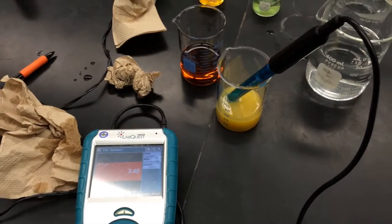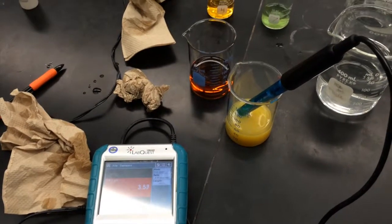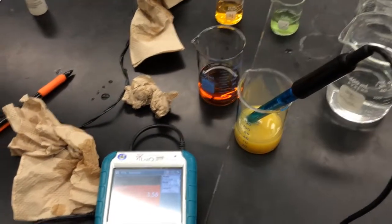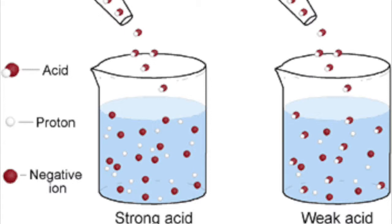pH meters can be used to determine whether an acid is a strong acid or a weak acid based on its pH. But what is the difference between a strong acid and a weak one?